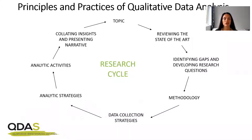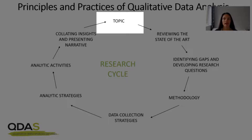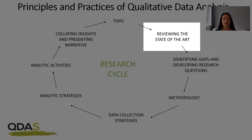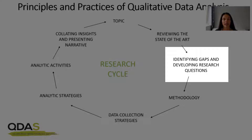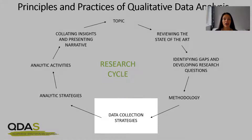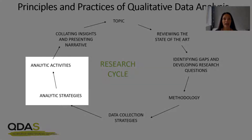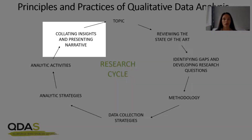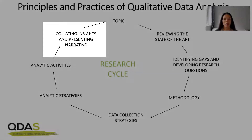This course is all about the research cycle. We start by narrowing down the topic, exploring how to review the state of the art, how you go about identifying gaps in the literature and what good research questions look like. We touch on methodology and ideas around data collection. We talk about analytic strategies and analytic activities that you're likely to undertake in doing a qualitative data analysis. And we finish up by talking about collating insights and presenting the narrative, which you do when you're writing up.